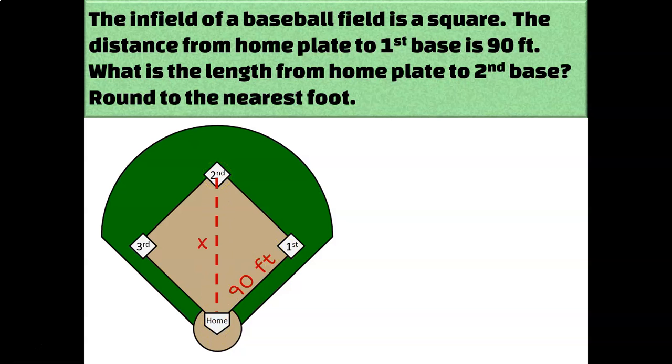Well, what does this have to do with 45-45-90 triangles? Well, it's said in the directions that the infield is a square, which means that this length right here from home to first, that's the same length from first to second. So that means that this is an isosceles triangle, which means that since these two sides are the same, these two angles are the same. And since the acute angles of a right triangle have to add up to 90, I can take 90 and divide it by 2 and figure out that both of these angles must measure 45 degrees. So I do indeed have a 45-45-90 triangle that I'm working with.